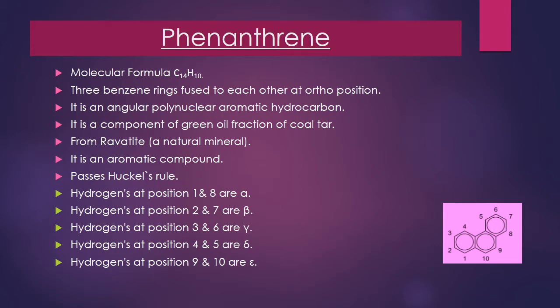Phenanthrene does not contain any hetero atom, hence it is a hydrocarbon which contains three benzene rings fused to each other at ortho positions. The third ring is angular to the first two rings. It is also obtained from the green oil fraction of coal tar along with anthracene, and from revetite, a natural mineral containing phenanthrene.